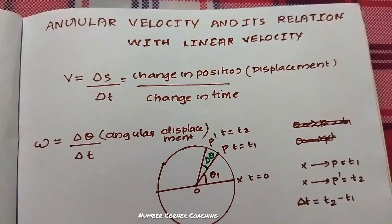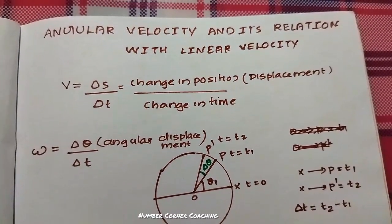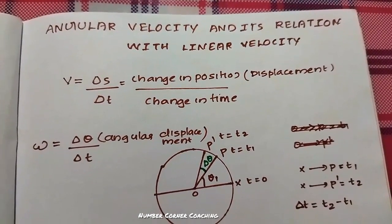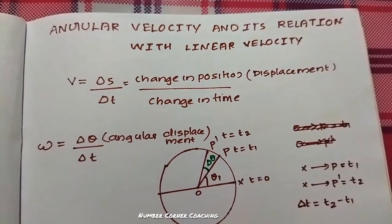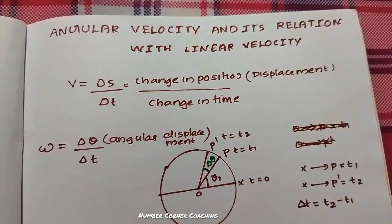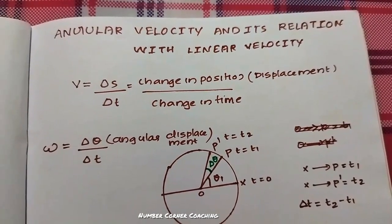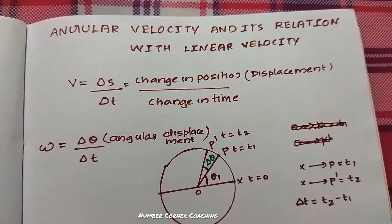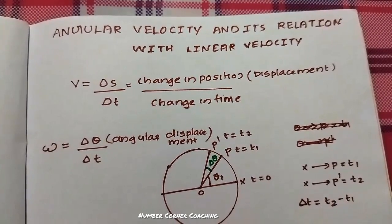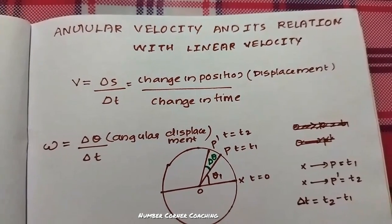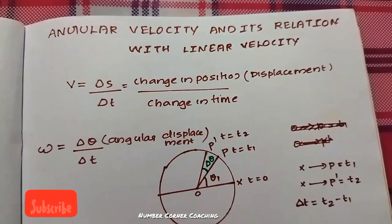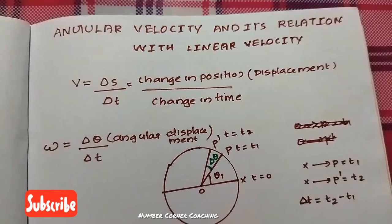The topic is angular velocity and its relation with linear velocity. First of all, let's talk about linear velocity — a very familiar term. The equation of linear velocity is: V is equal to delta s by delta t, that is change in position by change in time, or displacement by change in time.